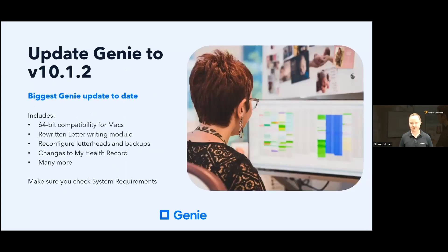The first requirement is to update your version of Genie. This is our biggest release ever of Genie, with thousands of hours of developer time invested. This version allows for compatibility with the new Mac operating systems including Catalina to Ventura. The Letter Writer window has had a complete rewrite to be compatible with the new version of 4D Write from our database manufacturer.